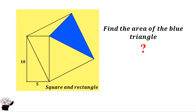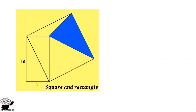First of all, we can draw a line here which crosses the square. This line is supposed to be parallel to this line. We can also draw a line here which should be parallel to this line. Now, what does it show us? It means that we have the diagonal of this quadrilateral, and this is also the diagonal of this one.